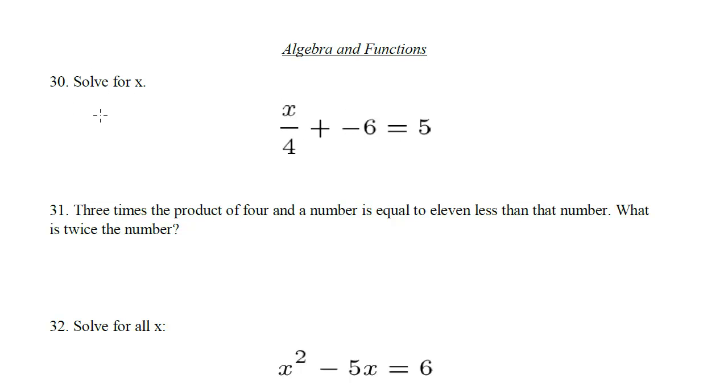Alright, so let's move the 6 over to the other side. We get x over 4 equals 11. Multiply both sides by 4, we get x is 44.